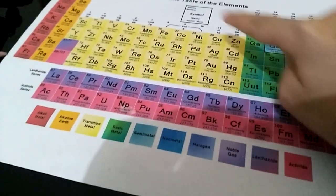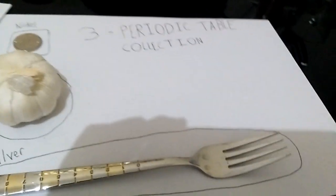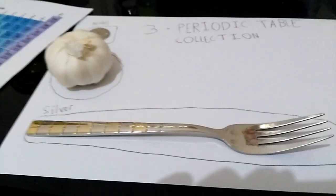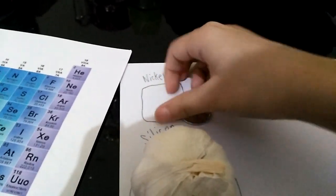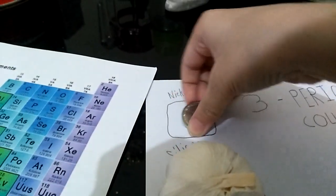These are only the elements I just got, so here's my three periodic table collection. Here I just got nickel, my coin. I probably want to keep it because I want to be rich to make videos.